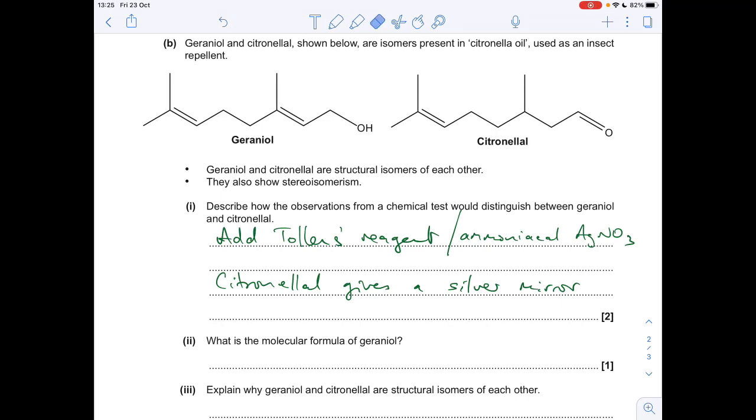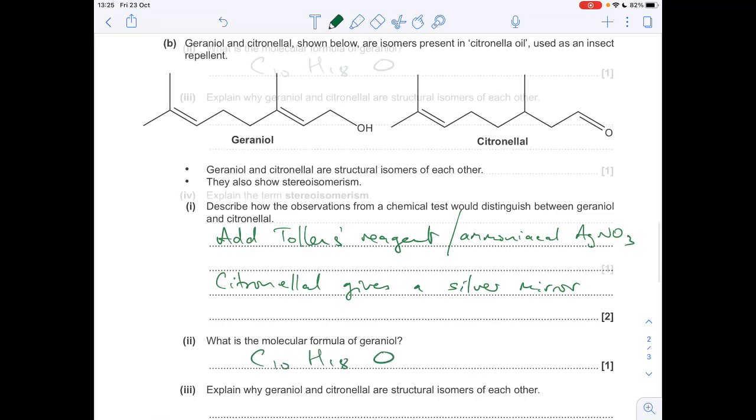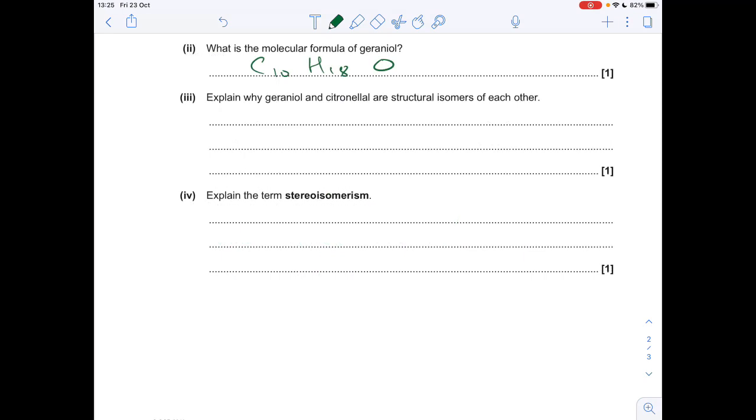Next part, we've got to work out the molecular formula of geranial. So just count all the carbons, the hydrogens and the oxygens and group them together. Don't put the OH group on its own because that's not molecular formula. C10, H16, O. Explain why geranial and citronellal are structural isomers of each other. Literally, just got to give the definition. So you just need to say they've got the same molecular formula, but different structural formula.